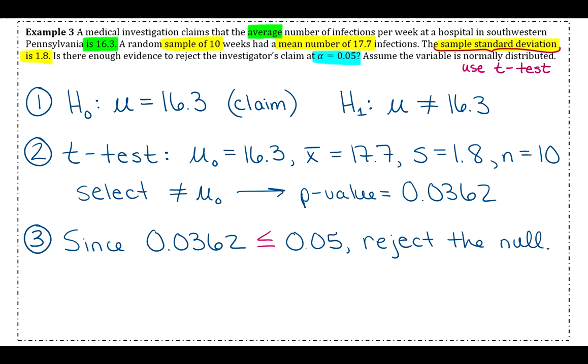And then step four, we just have to make our summary statement. So we rejected the null hypothesis. The null was the claim, so therefore we say there is enough evidence to reject the claim.